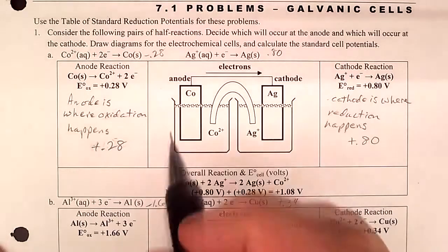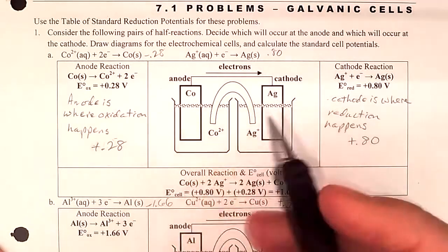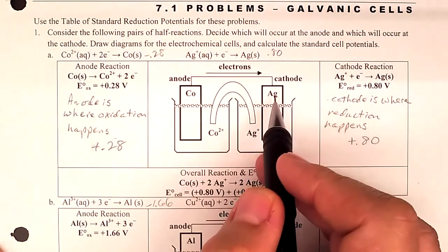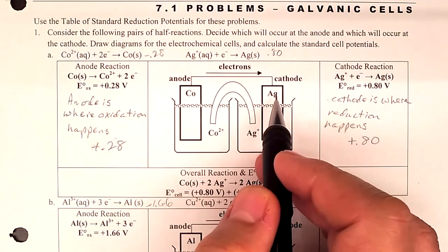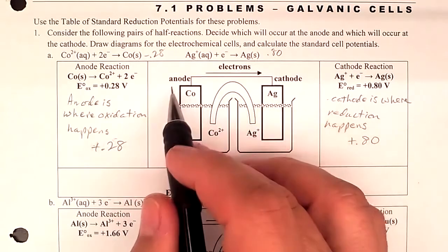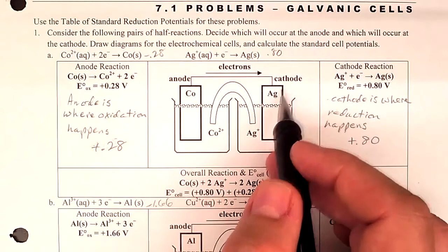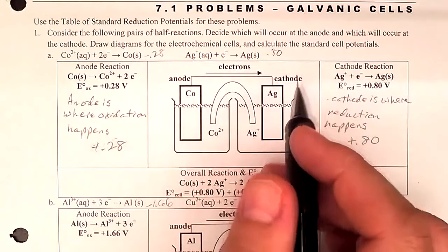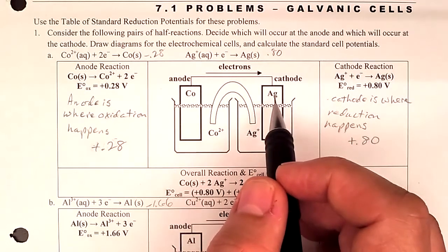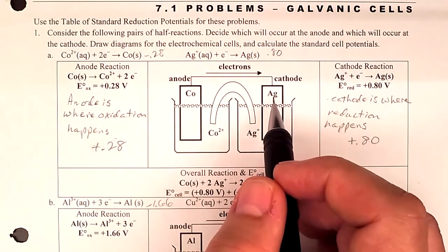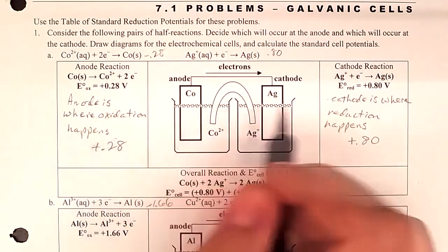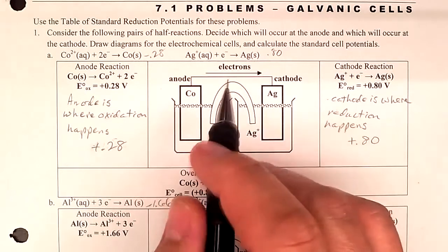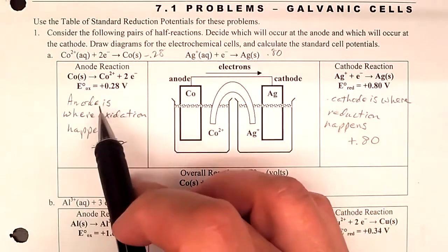In a voltaic cell, the anode is where oxidation occurs and the cathode is where reduction occurs. A helpful mnemonic: oxidation and anode both start with a vowel, while cathode and reduction both start with a consonant. Oxidation is the loss of electrons; reduction is the receiving or gaining of electrons. Write it down — you need to know this.